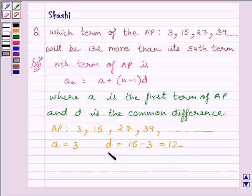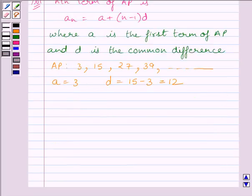So we get d is equal to 12 and a is equal to 3. Now, let us find out the 54th term of the AP. We know the 54th term of the AP is given by a + (54-1)d.